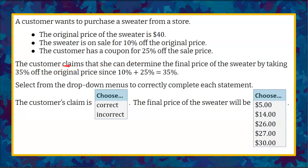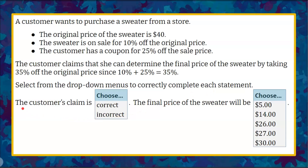We're told that the customer is claiming she can determine the final price of the sweater by taking 35% off the original price, since 10% plus 25% equals 35%. So we're going to select from these drop-down menus to correctly complete each statement — we need to determine if the customer's claim is correct or incorrect, whether these are the same, and what the final price of the sweater will be.